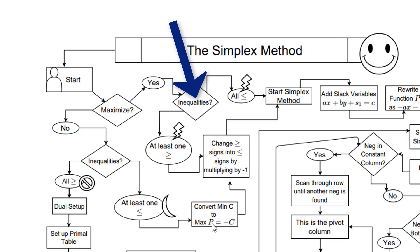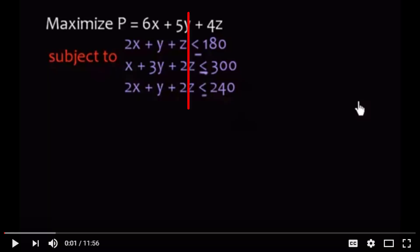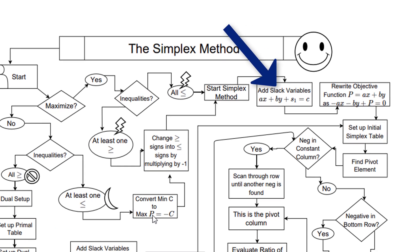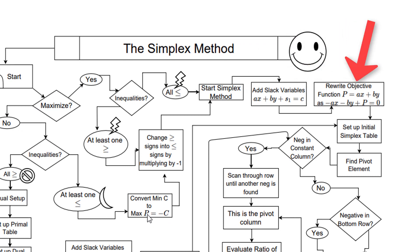Now what kind of inequalities do I have? Well, you'll notice that they all are less than signs or less than or equal to signs. Alright, moving on. You'll notice that there's a little lightning icon here, so we're going to use that later. Then you're going to add the slack variables, rewrite the objective function, and then set up the table.